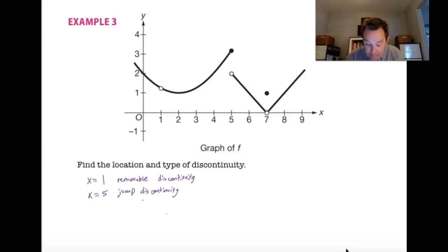And finally, at X equals 7, we have another hole, but it's defined above at X equals 7. So, we call that a point discontinuity. And that's it.